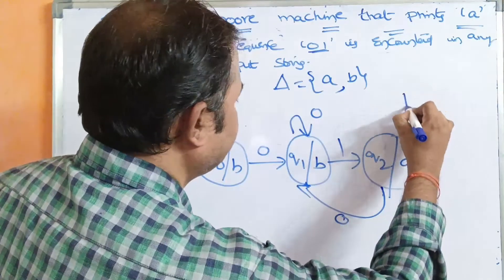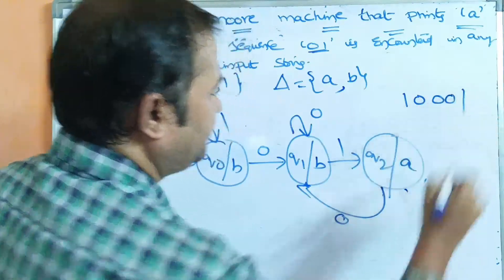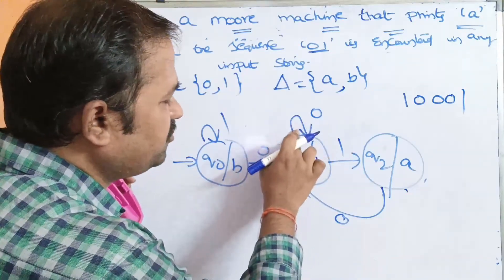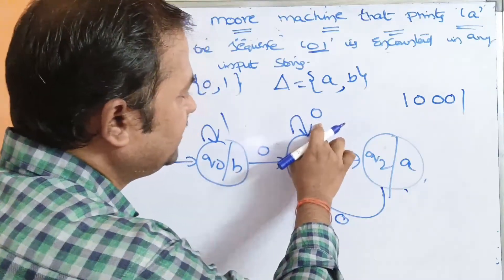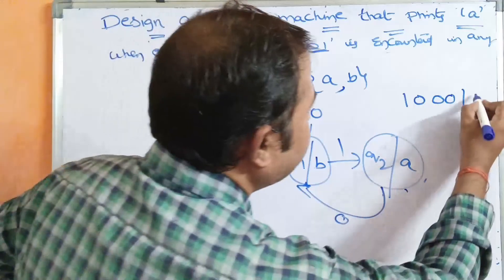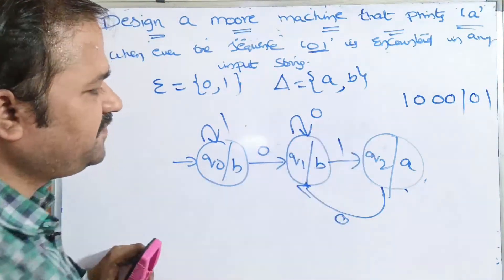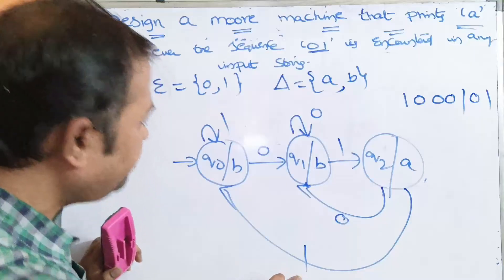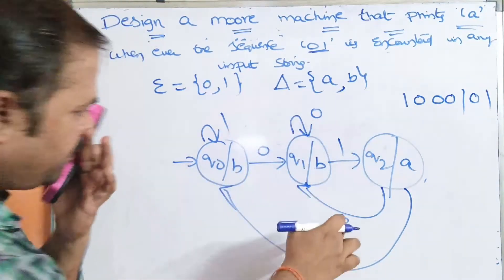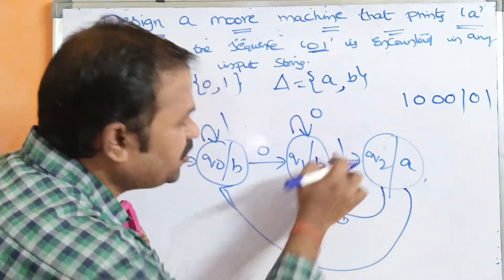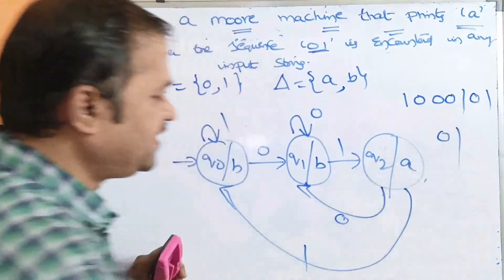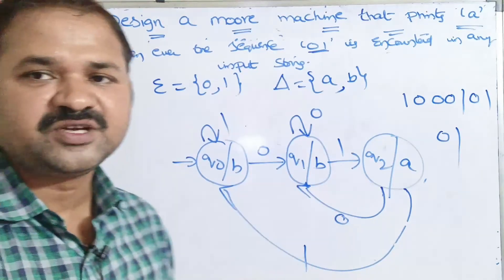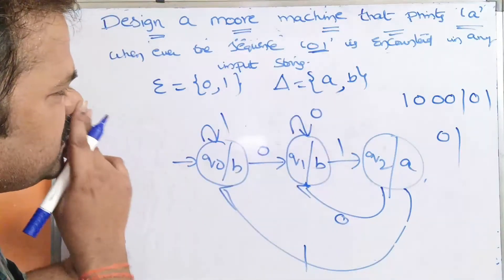For Q2 on 0: after the sequence 001, if we get 0 it could start a new 001, so Q2 on 0 goes to Q1. For Q2 on 1: after 001 followed by 1, the next 01 could still form 001, so Q2 on 1 goes to Q0. This completes the Moore machine. Let's verify with input string 1, 0, 0, 0, 1: Q0 on 1 → Q0, Q0 on 0 → Q1, Q1 on 0 → Q1, Q1 on 0 → Q1, Q1 on 1 → Q2 (output A). So 001 sequence is found.